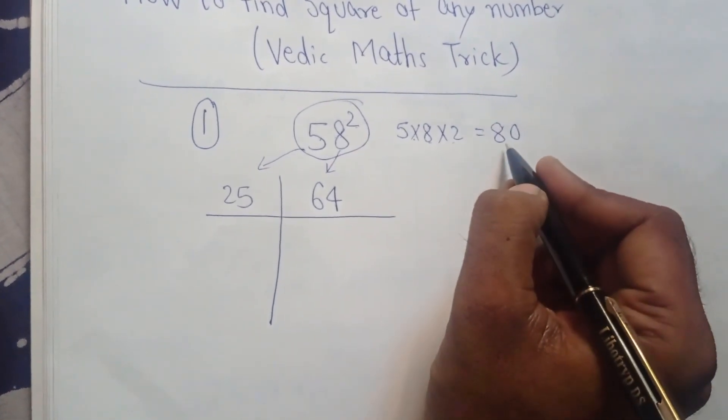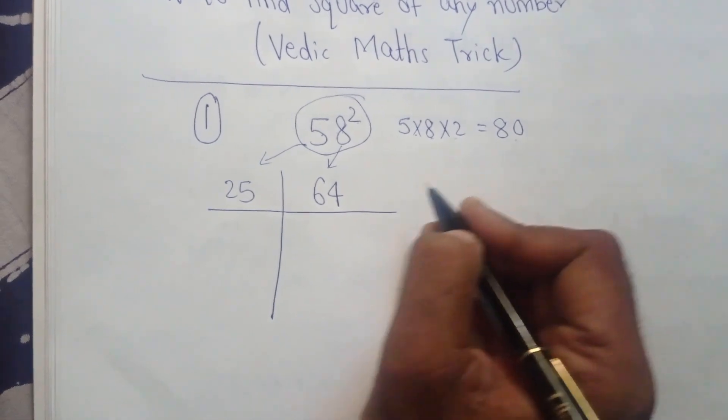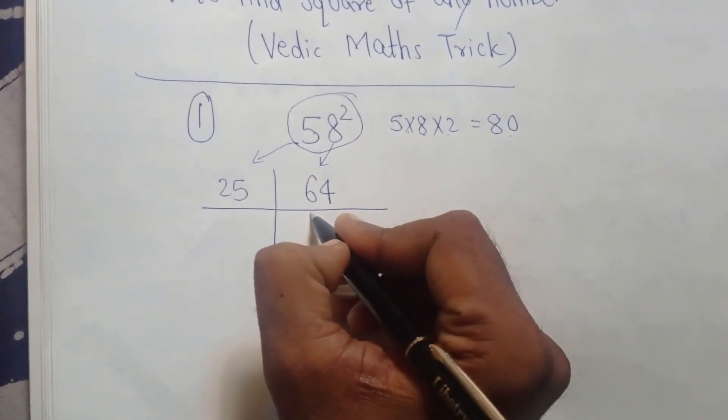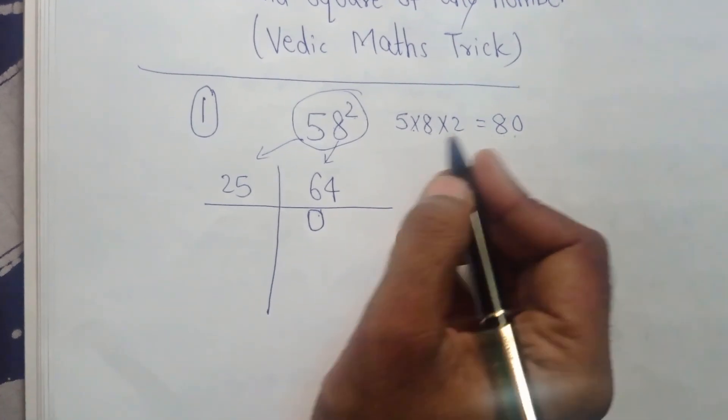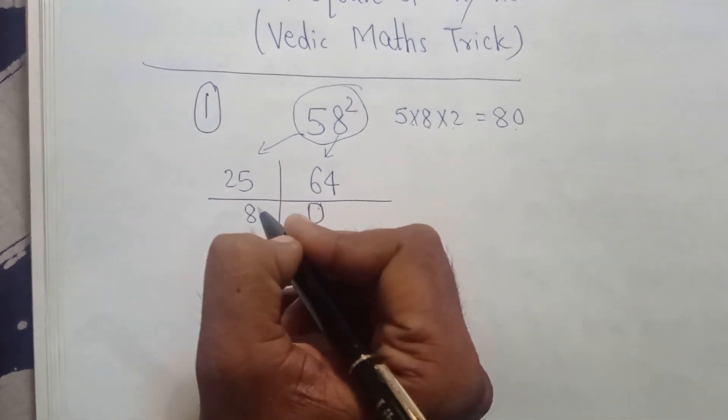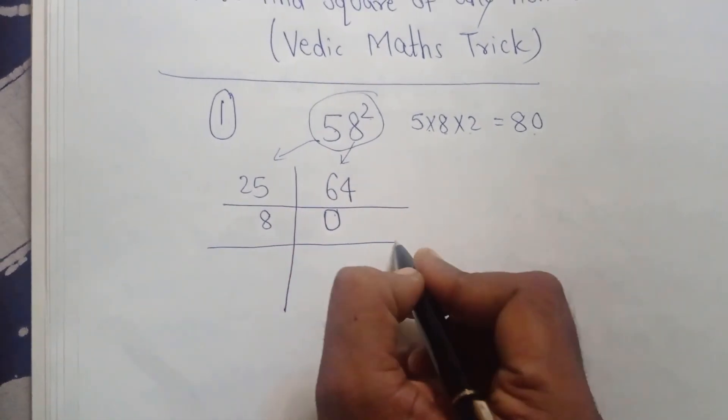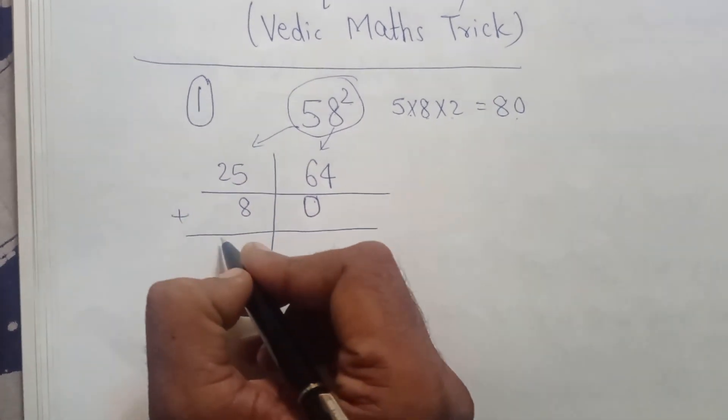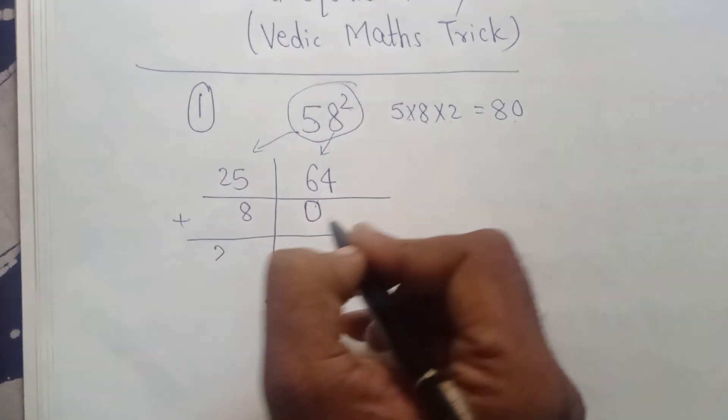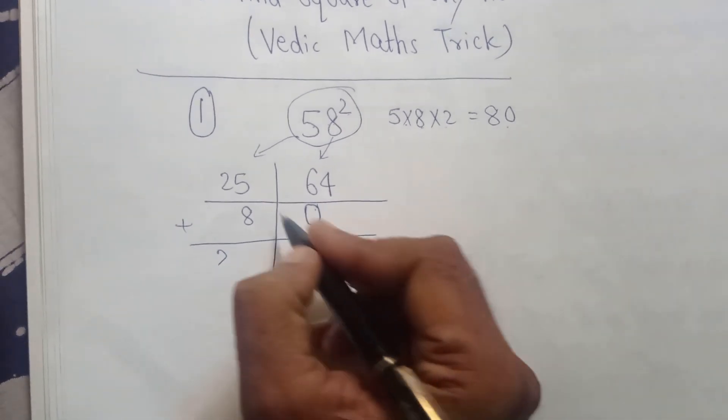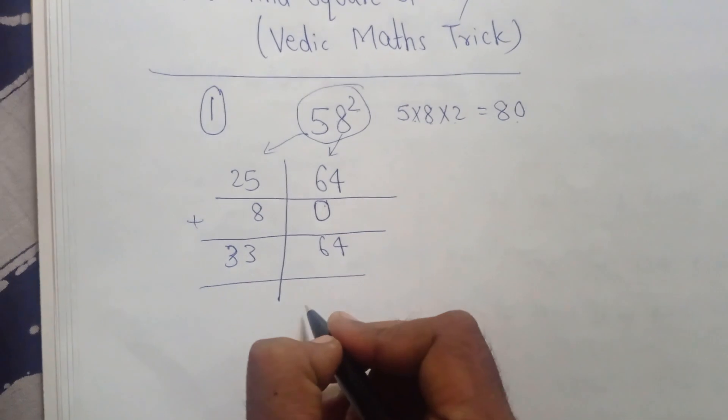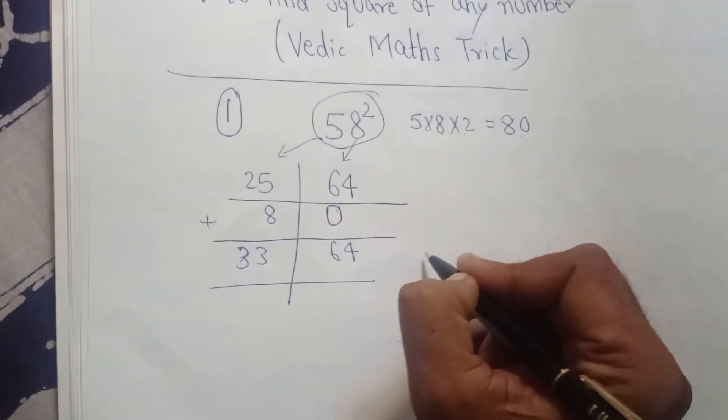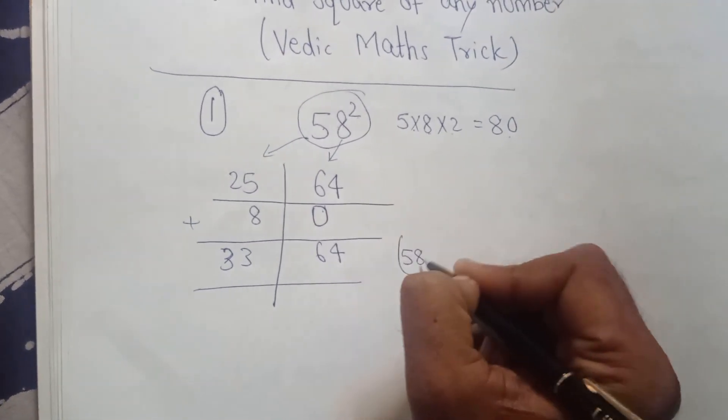Now this 0 will be written in place of this number, and this 8 we will write in place of this number. Now add it: 4, 6, 33. So the square of 58 is 3364.